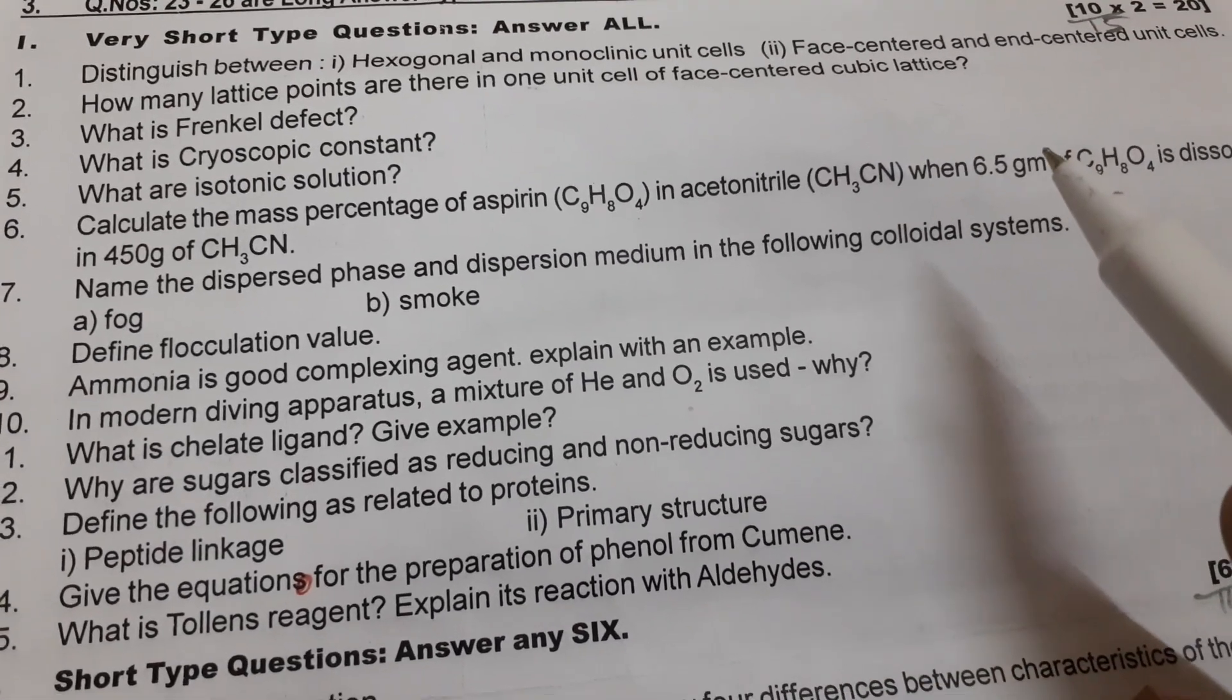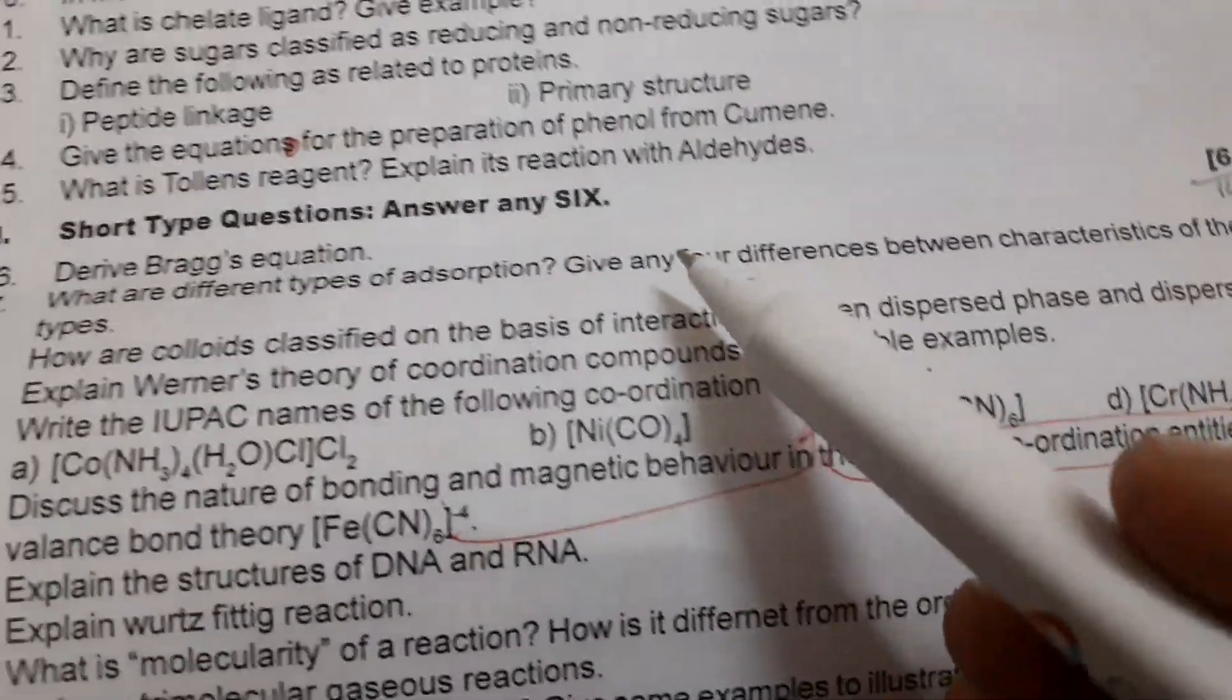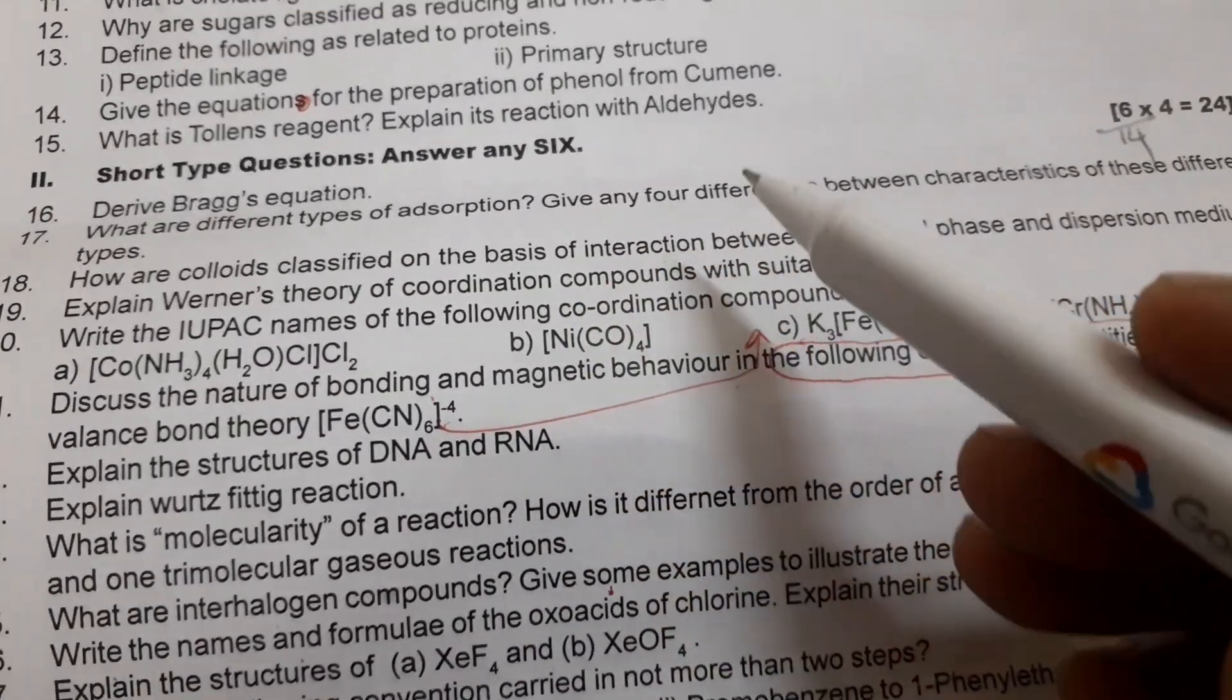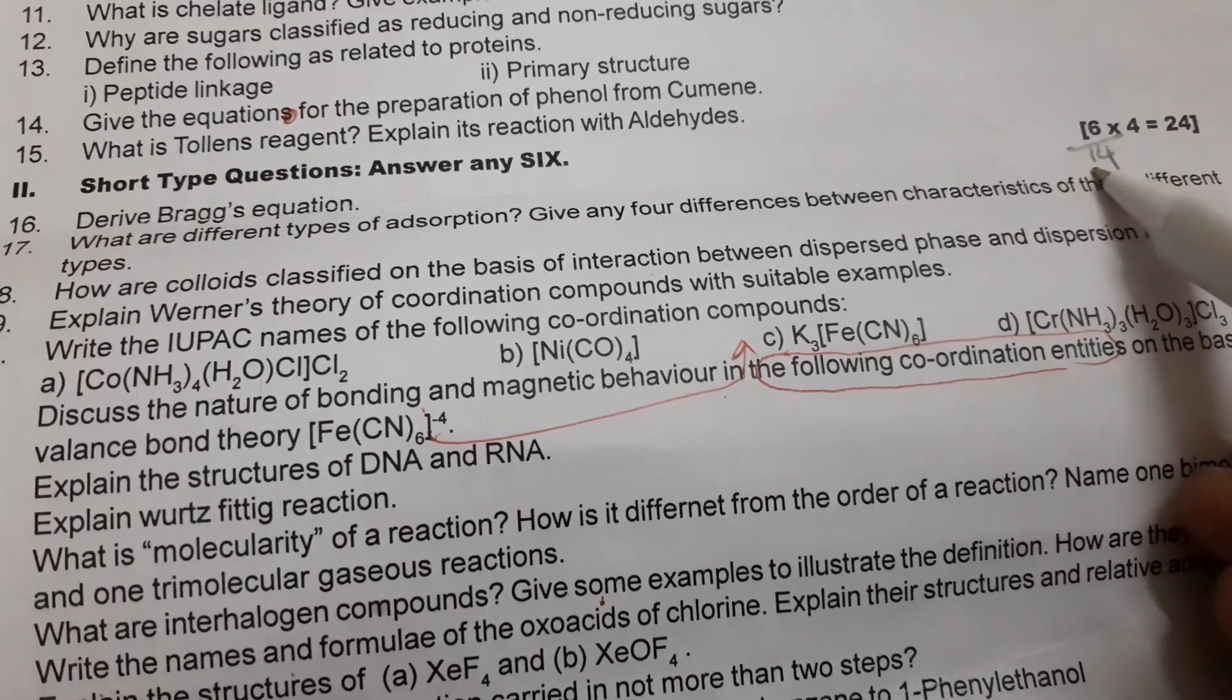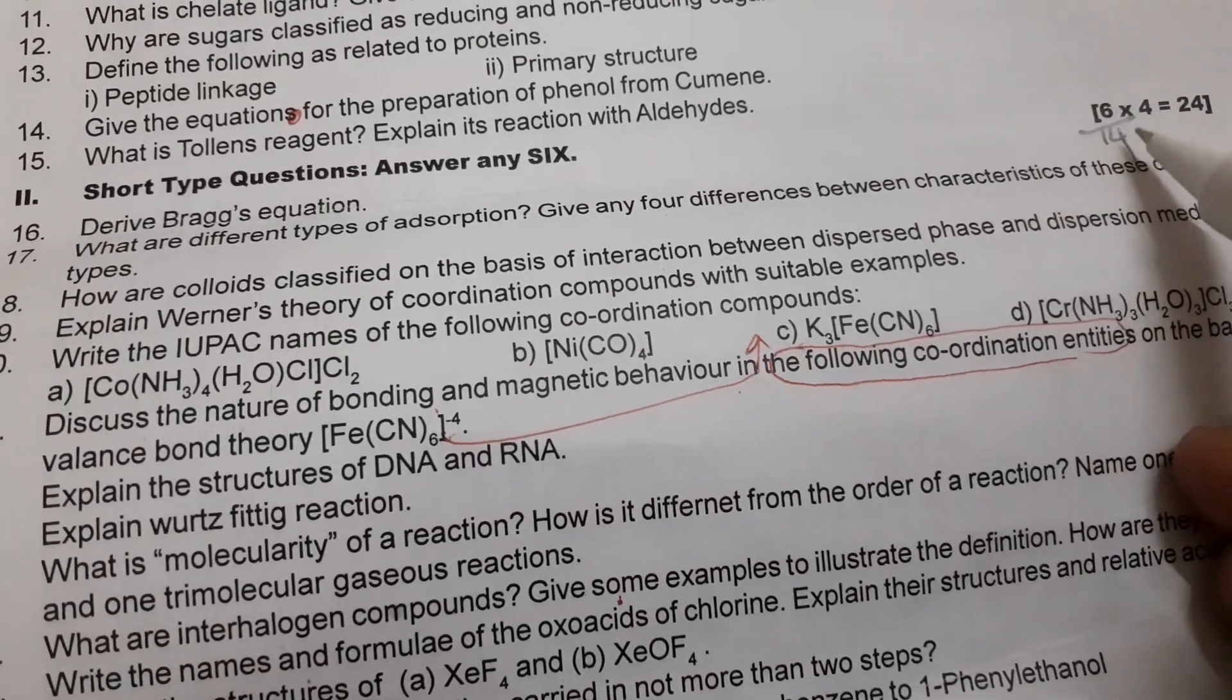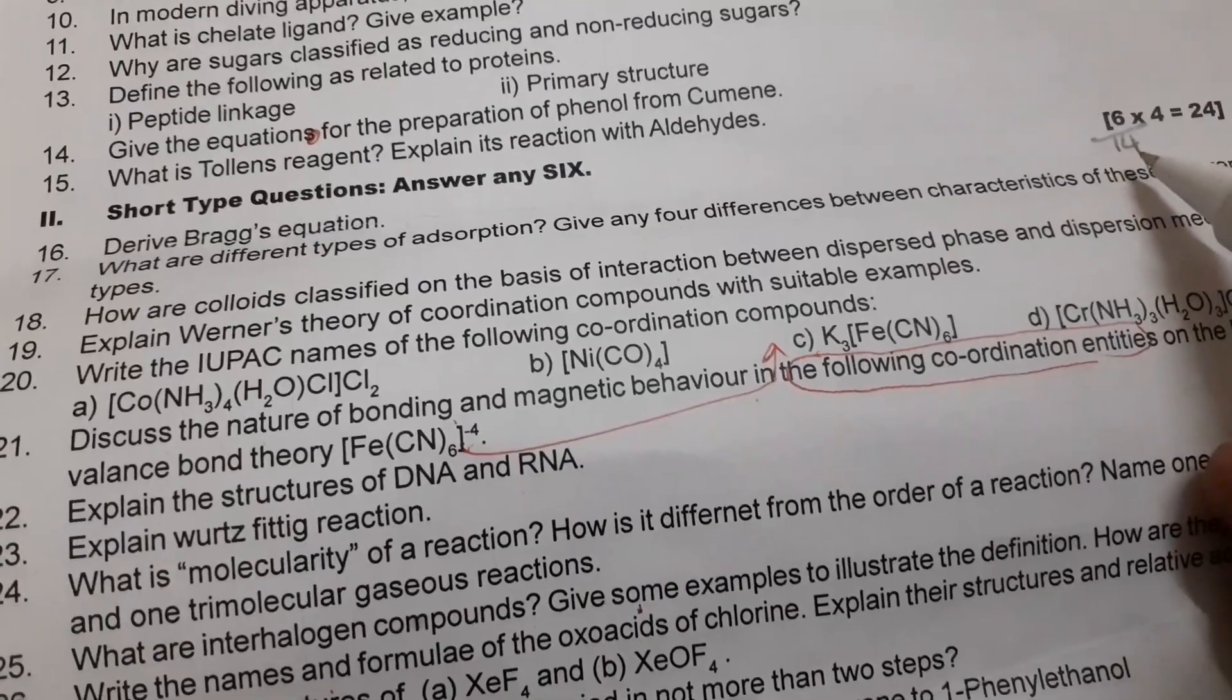So 10 questions only, VSAQs. Now come to the second part, SAQs, short type questions, short answer questions, four mark questions. So six only we have to answer out of 14, plenty of choice, very good choice. 14 are given, out of 14 only six you need to answer, each one carries four marks, six into four is 24 marks.